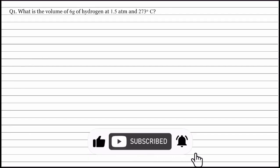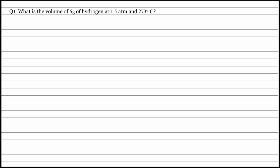Chapter 5, Question 1. What is the volume of 6 gram of hydrogen at 1.5 atmosphere and 273 degree centigrade?